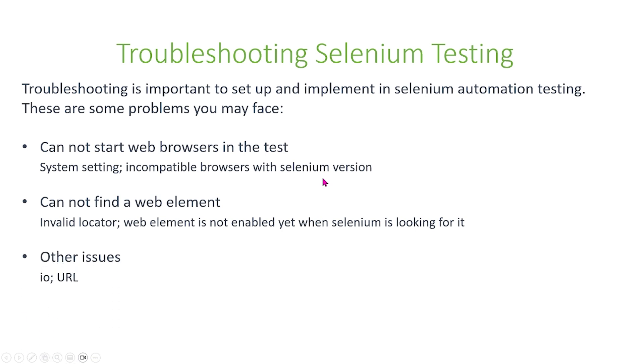Finally, you might get some other issues, for example IO issues and URL issues. These are some other issues you might have to deal with during your Selenium automation testing project.